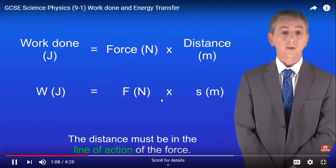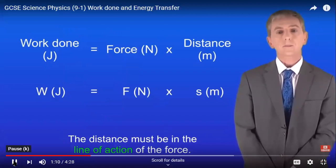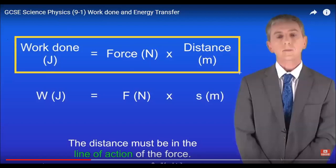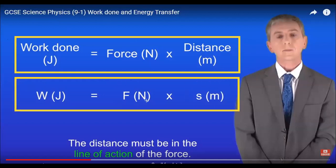You are not given this equation in the exam, so you do need to learn it. Work done equals force times distance — also written as force times s, where s is displacement. The distance must be in the line of action of the force, so it is essentially about displacement in two dimensions.